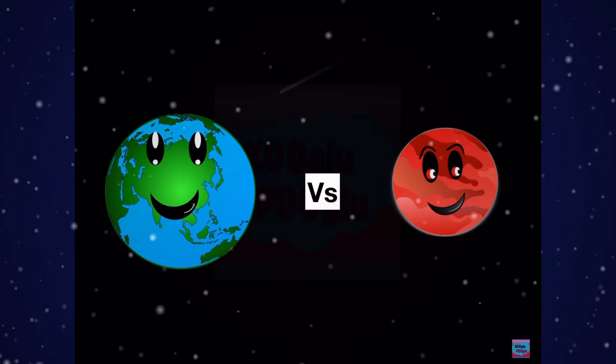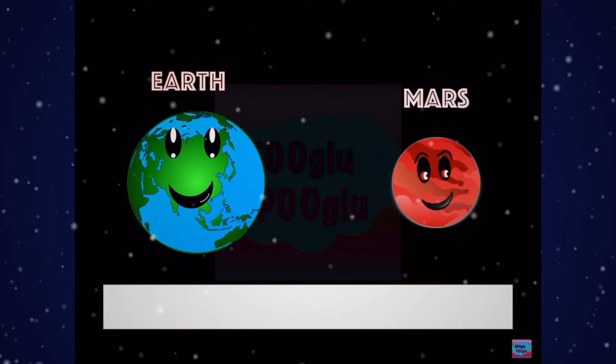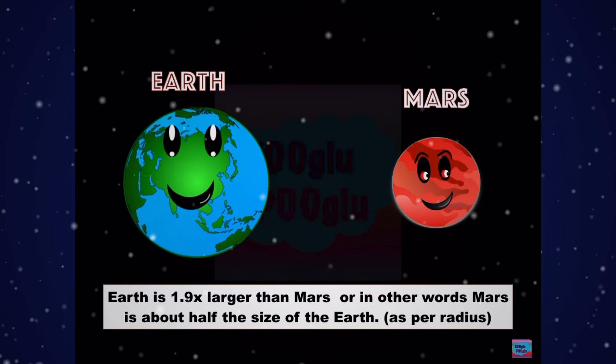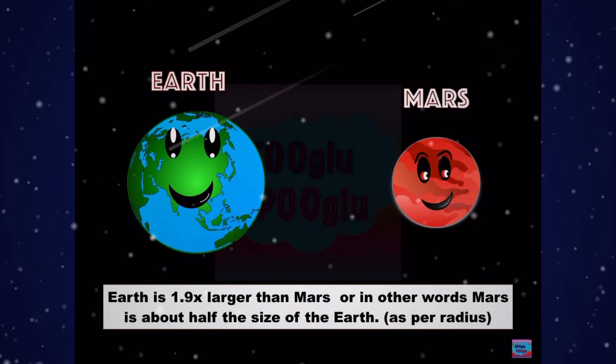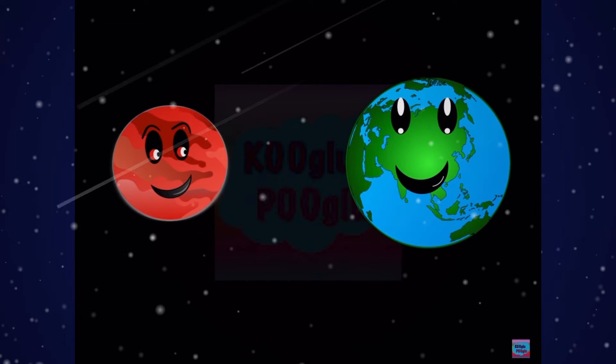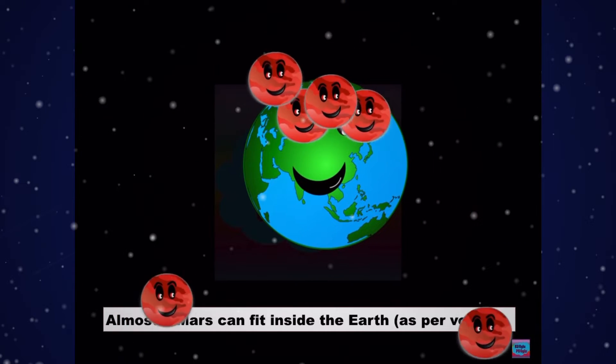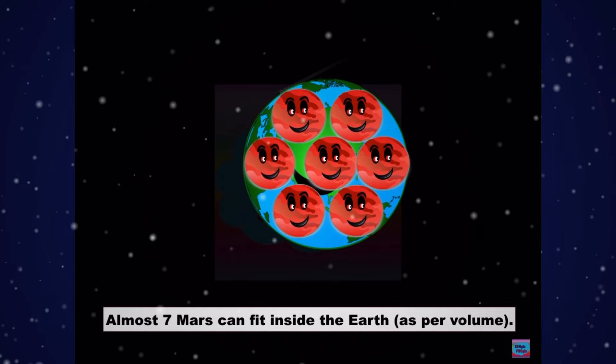Earth versus Mars. Earth is 1.9 times larger than Mars, or in other words, Mars is about half the size of Earth as per radius. Almost seven Mars can fit inside Earth as per volume.